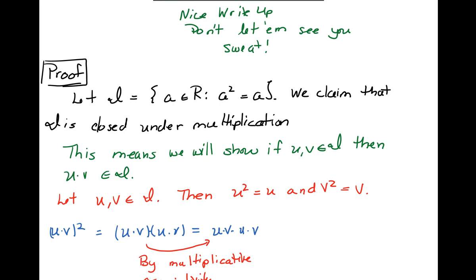We're going to step the reader through the entire calculation, not give them a series of calculations without explanations. uv squared is uv times uv. Well they believe that for sure because that's the definition of squaring something. But by multiplicative associativity I can drop off the parentheses.